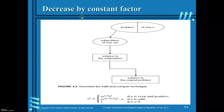Next we will see decrease by constant factor. Given a problem of size n, reduce the problem by a factor of 2. Find the solution to the smaller sub-problem, then extend the solution of this sub-problem to get the solution to the original problem. So assume that you already know the solution for a^(n/2). Then you can easily find a^n by squaring it. When n is even and positive, squaring a^(n/2) gives a^n. When n is odd, if you know a^((n-1)/2), just square it and multiply by a. The base condition is when n equals 0, a^0 is 1.